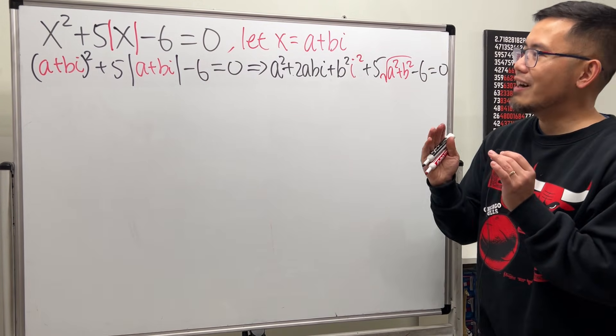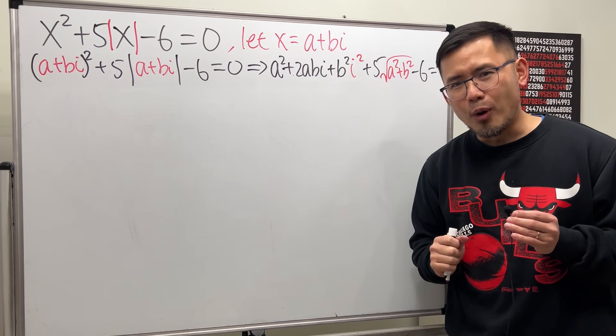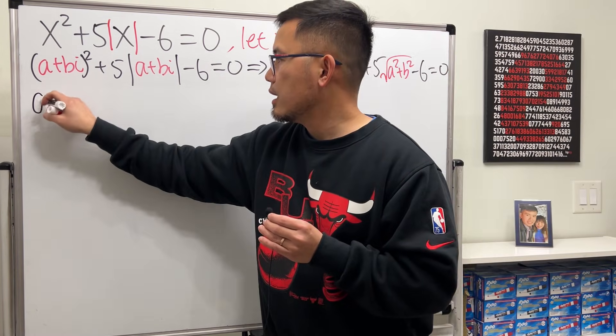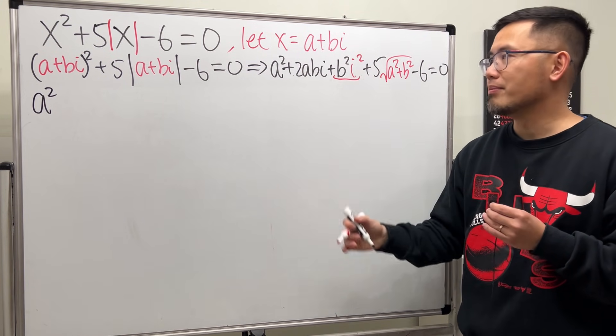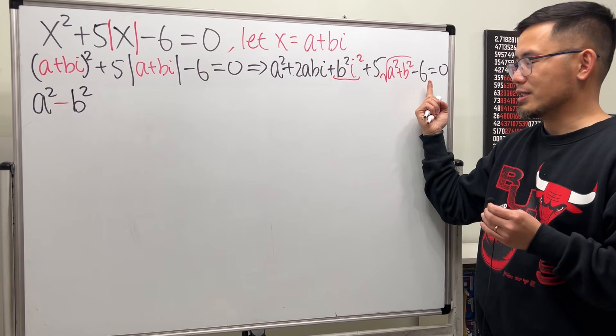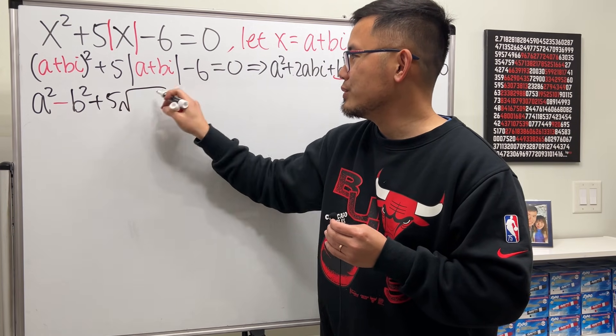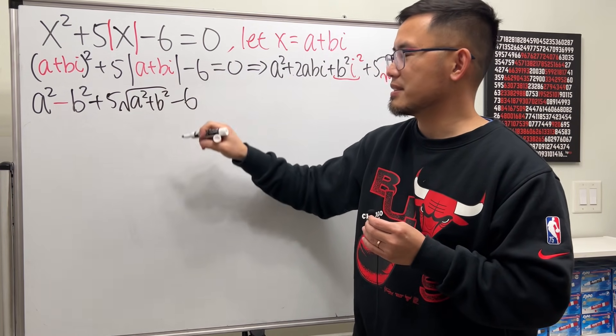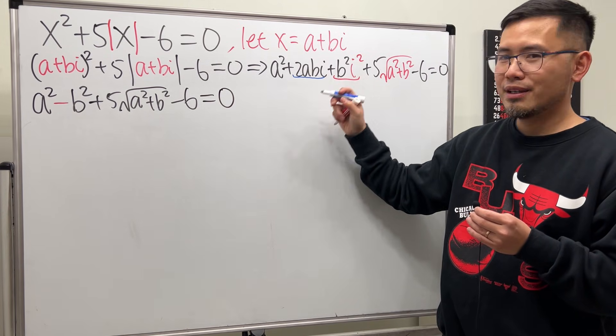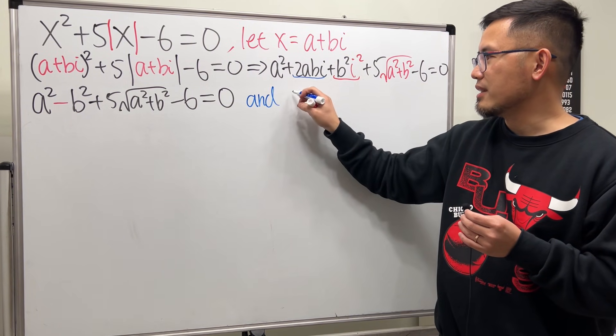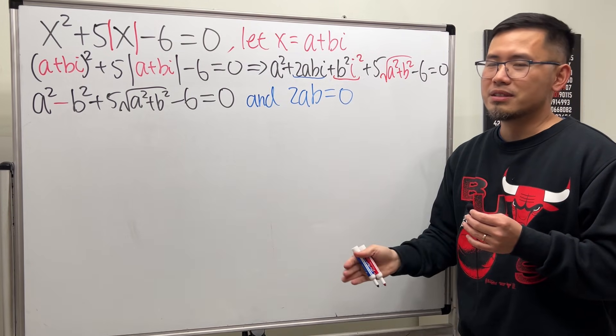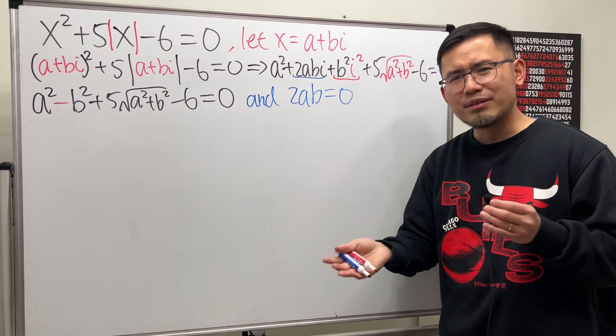Now let's take a look right here. We have the real part and also the complex part. Both parts have to be equal to 0, because we have 0 on the right-hand side. So let's put on the real part first, which is a squared. And then this right here is also real, because i squared is negative 1. So that will give us minus b squared. And then this is real. Likewise, minus 6 is very real as well. So plus 5 square root of a squared plus b squared, and then minus 6. This has to be equal to 0. Now, for the complex part, we just have 2abi. So that means 2ab has to be equal to 0. And that's the second condition that we need. This right here is actually not so bad, thanks to this condition here, because either we have a is equal to 0 or b is equal to 0. We just have to do casework.